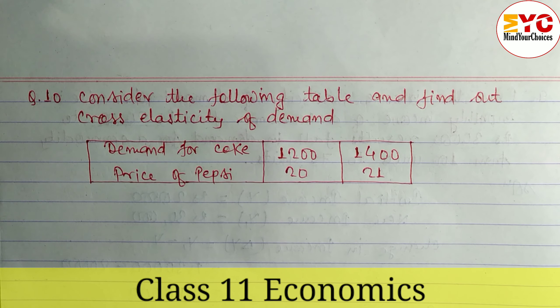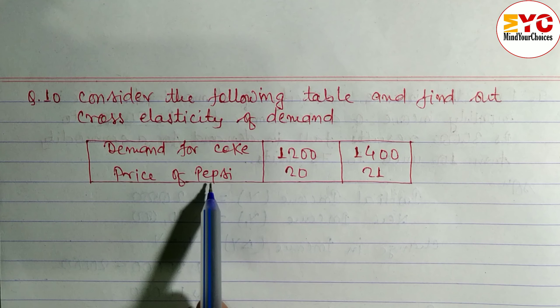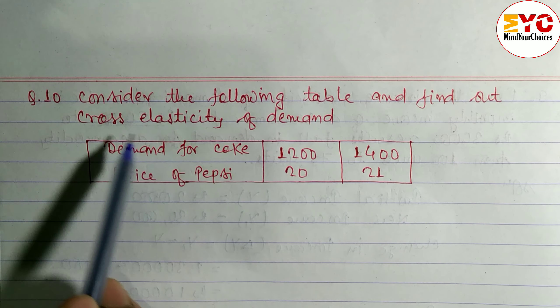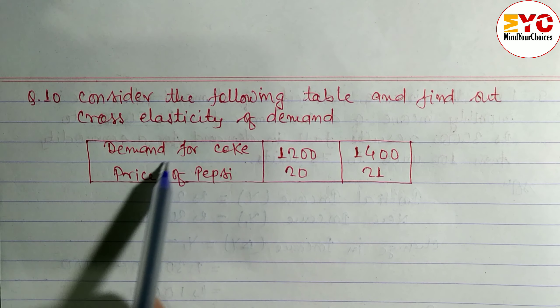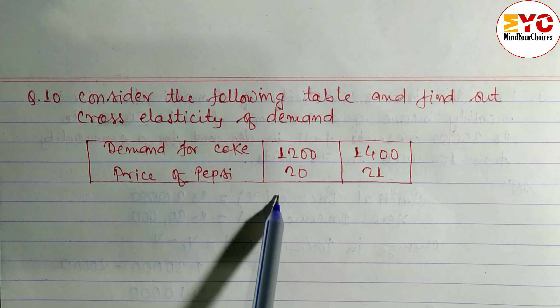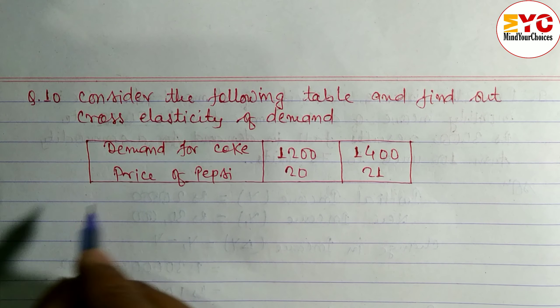In this video we will learn how to find out the cross elasticity of demand. Consider the following table and find out the cross elasticity of demand — demand for Coke is given, price of Pepsi is 20 and 21. Cross elasticity of demand means the price of one product affects the demand of related goods. So the price of Pepsi will affect the demand of Coke — when the price of Pepsi increases, it affects the demand for Coke.